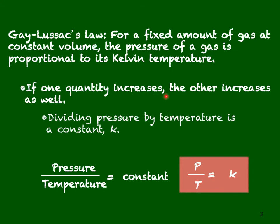Gay-Lussac's Law states that if one quantity increases, the other must increase as well. This is a direct proportionality. Another way to say that is, if I take pressure over temperature, that means it's a constant, or P over T is equal to a K.